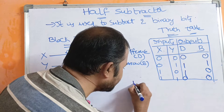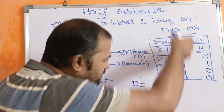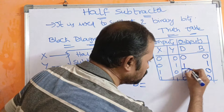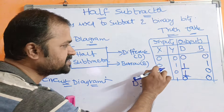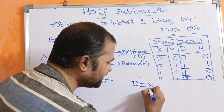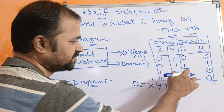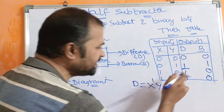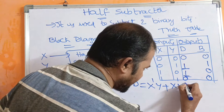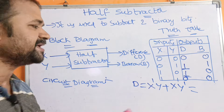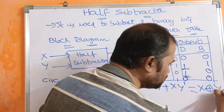For that, first we have to derive the equations. Looking at the Difference column, we have two ones. For the first one, the combination is X=0, Y=1, which can be written as X-bar·Y. For the second one, X=1, Y=0, written as X·Y-bar. So X-bar·Y plus X·Y-bar is nothing but the formula for X XOR Y.